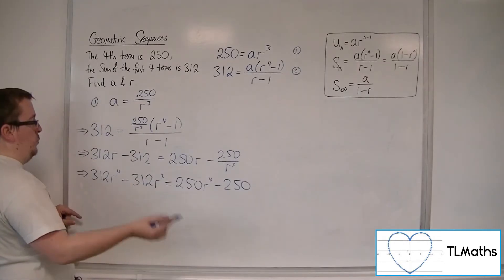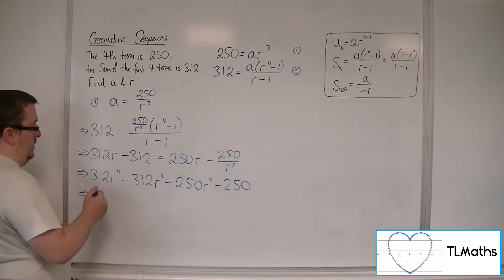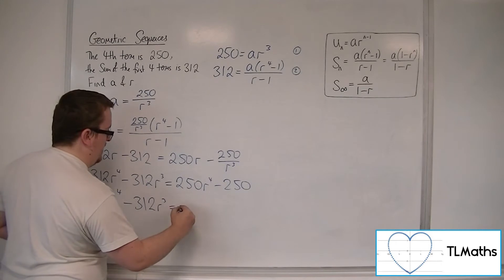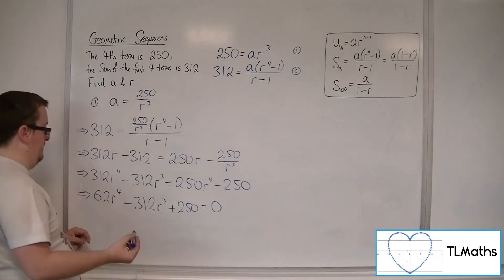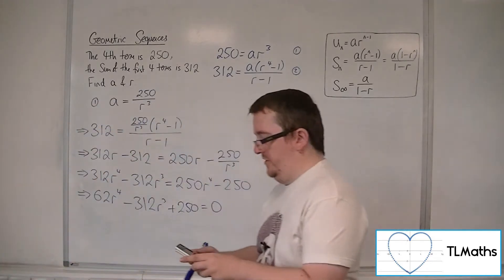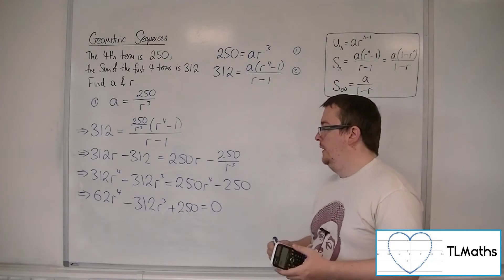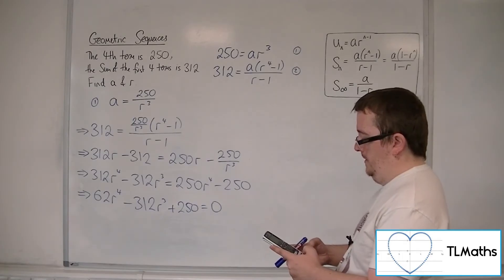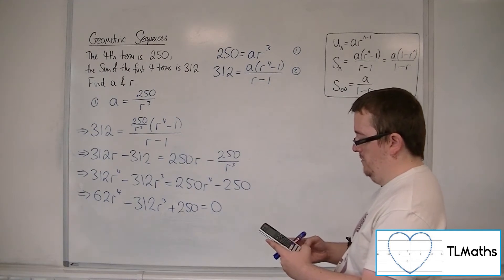Moving the R to the 4 terms together leaves 62R to the 4. The 312R cubed stays, and adding 250 to both sides gives me the quartic equation: 62R⁴ minus 312R³ plus 250 equals 0. Rather than factorising this by hand, I'm going to plug it straight into the quartic equation solver on the calculator, entering coefficients 62, minus 312, 0, 0, 250.